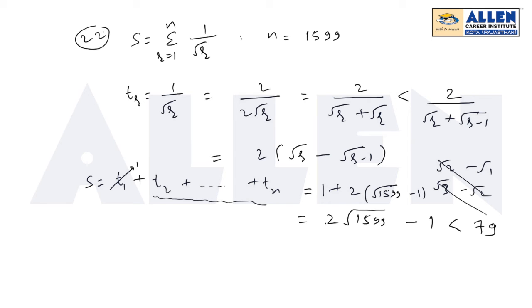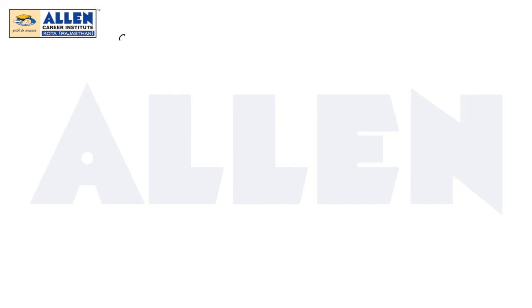Now we will find lower limit. So again we will take the same general term. Which means I am taking over here tr equal to 1 by root r. Again I will write in the same way like root r plus root r.